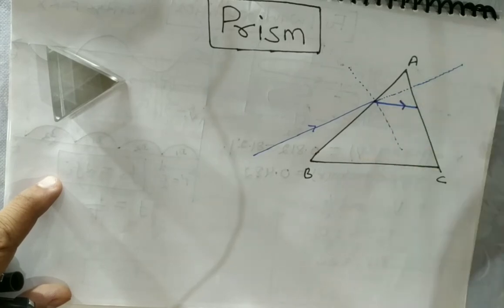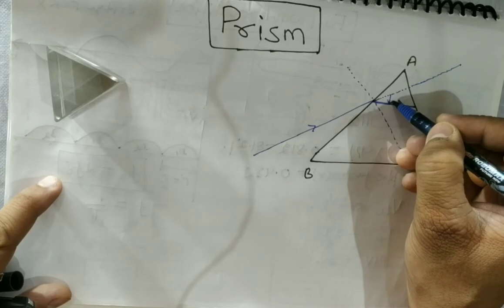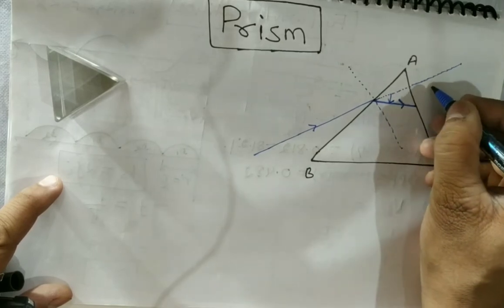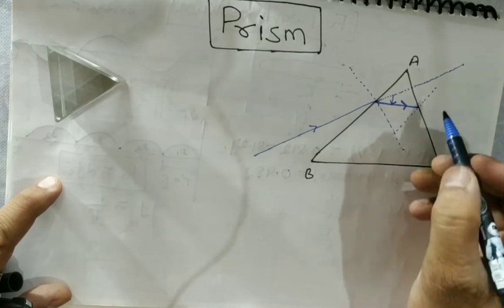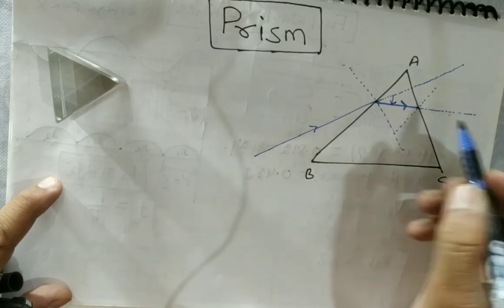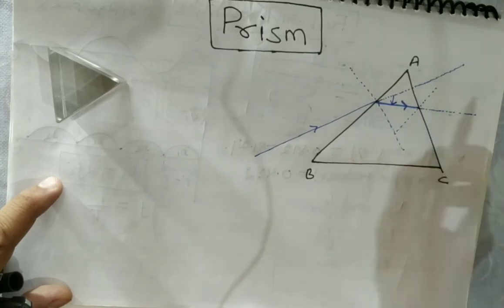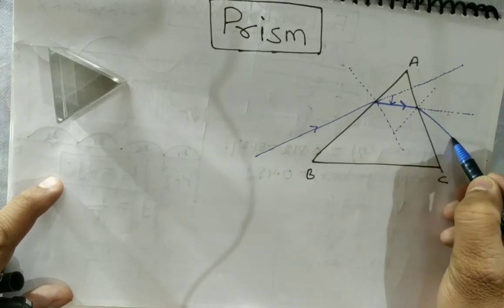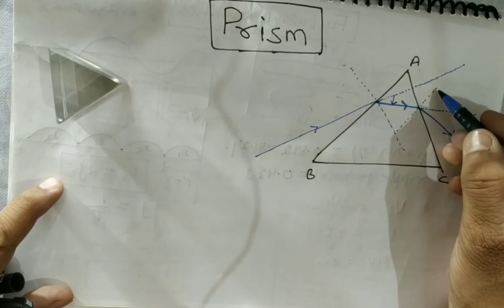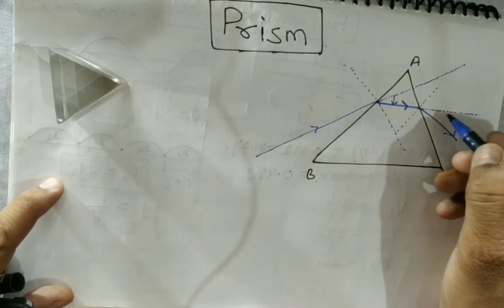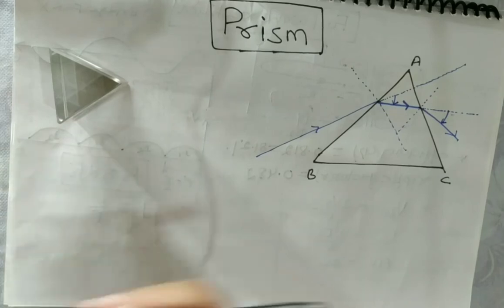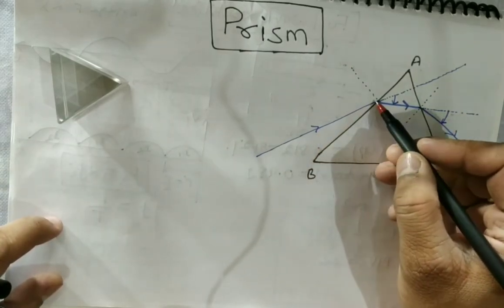At this point, this is the deviation. Now at the second surface, let us draw the normal. If there were no medium, this light would go straight, but because it is going from denser to rarer, it will bend away from the normal. The actual path bends away from the normal, so in this case there is a deviation at this surface too.